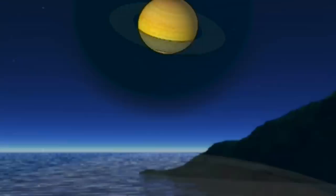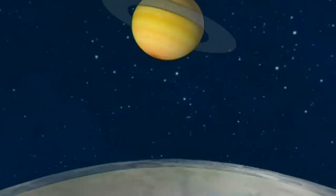De la Terre, notre vision des anneaux change en fonction de l'orbite solaire de Saturne. Quand son axe de rotation fait un angle de 26 degrés, vu de profil, les anneaux semblent disparaître.